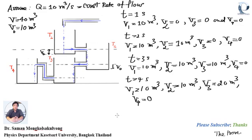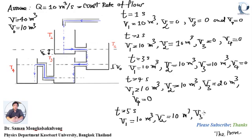For t equals 5 seconds, V1 is still equal to 10 mq, V2 equals 10 mq, and V3 equals 30 mq. We assume this level is equal to 3 times V0, so the water in tank 3 is 30 mq. V4 equals zero.